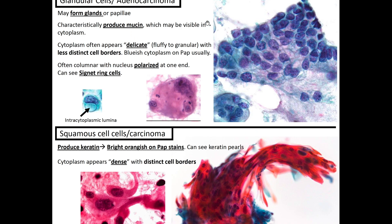Adenocarcinoma — 'adeno' meaning gland — may form glands or papillae, and characteristically produces mucin visible in the cytoplasm. Here we see intracytoplasmic lumina and a mucin vacuole. The cytoplasm often appears delicate, fluffy to granular with less distinct cell borders, a bluish cytoplasm on Pap stain, and is often columnar with the nucleus polarized at one end. You can also see signet ring cells.